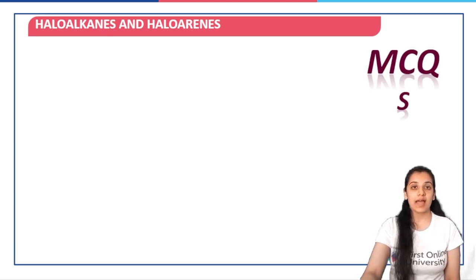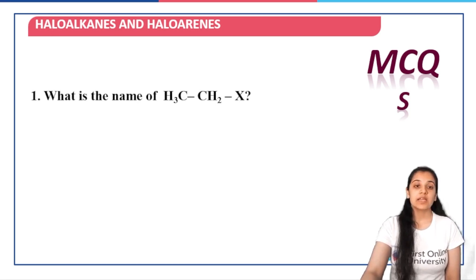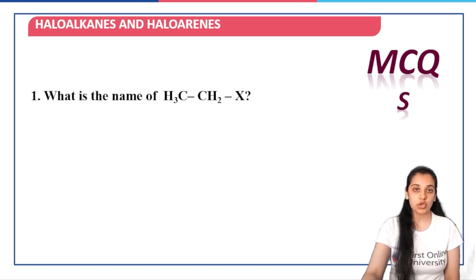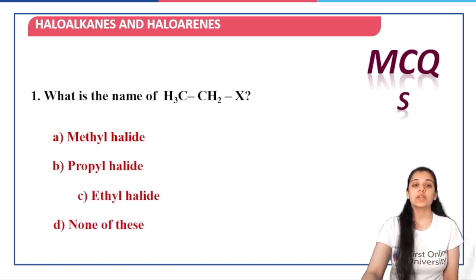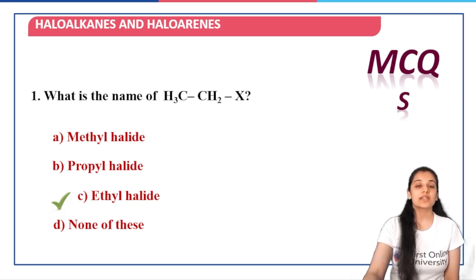Now, let us do a few concept checks. The first question is: what is the name of the compound CH3CH2X? CH3CH2 is simply the ethyl group and X is the halogen. So we can call it either ethyl halide or haloethane. Looking at the options, option C — ethyl halide — is the right answer here. Depending on the options given, you have to choose the right answer, whether it is a common name or IUPAC name.